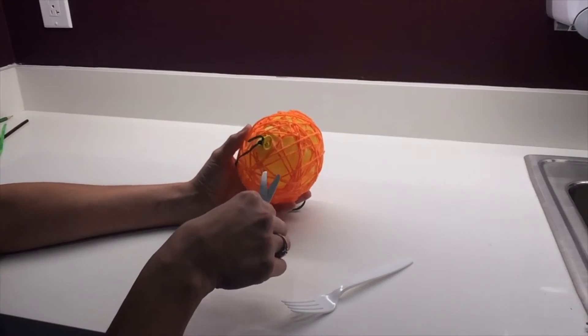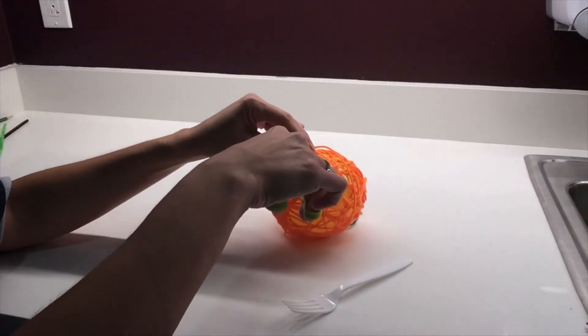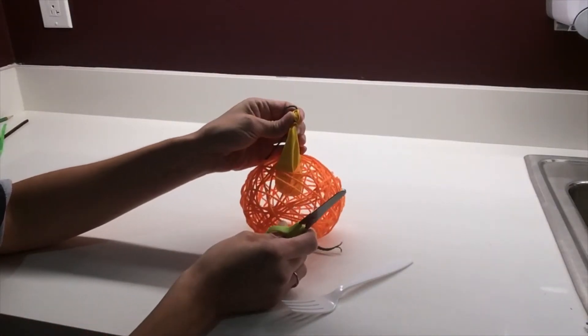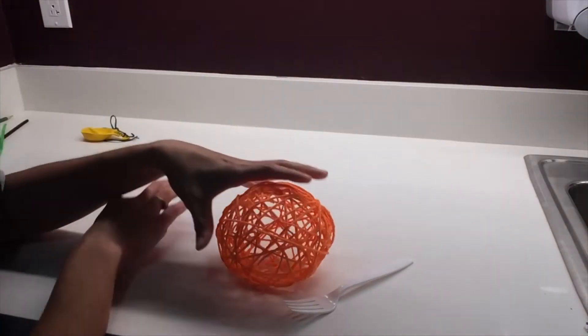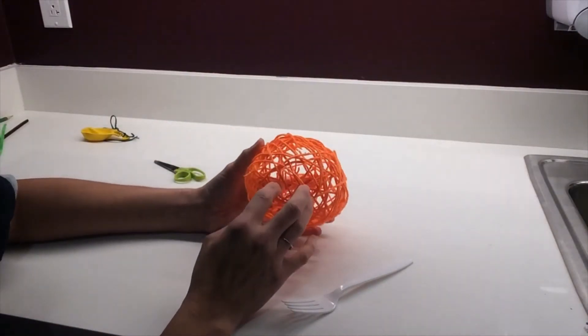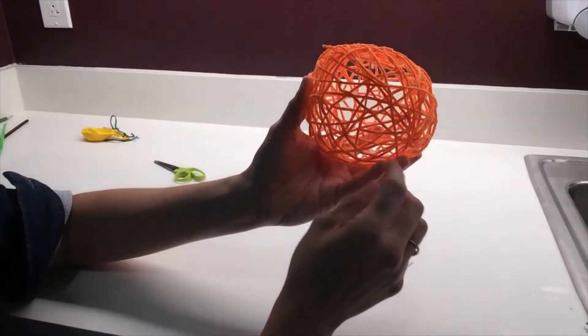Then you're going to take your pair of scissors and deflate the balloon and carefully remove it. If there are any glue flakes leftover, you can peel these out by hand.